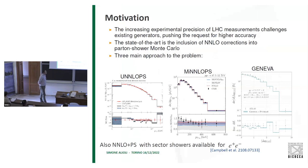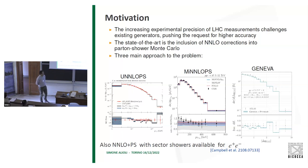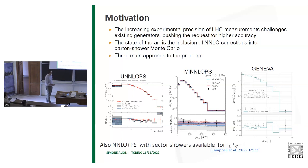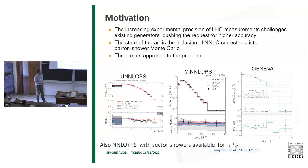The motivation is that increasing experimental precision from LHC measurements challenges existing generators, pushing for higher accuracy. The state of the art is the inclusion of NNLO QCD corrections into the parton shower Monte Carlo. Historically there have been three main approaches: the unitarized UNLOPS approach, the MINNLO_PS approach, which has already solved the problem of extending NNLO to massive colored partners such as tt-bar production, and the Geneva approach. There is also a recently appeared NNLO+PS based on sector showers, formulated only for e+e-, which I will not cover here.